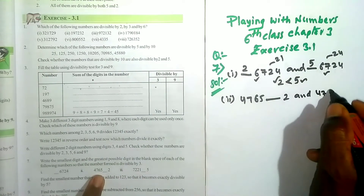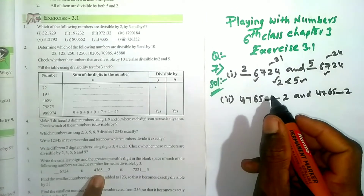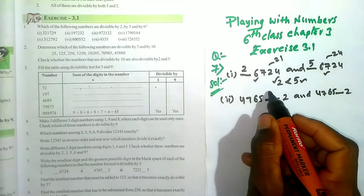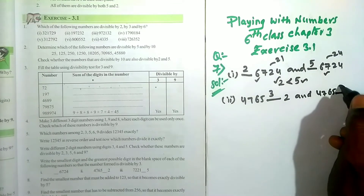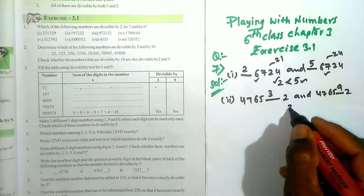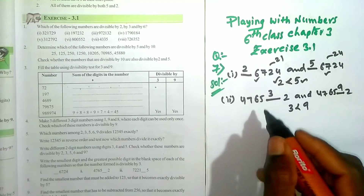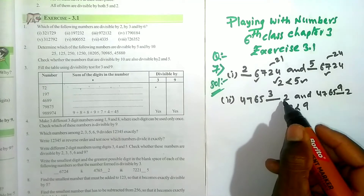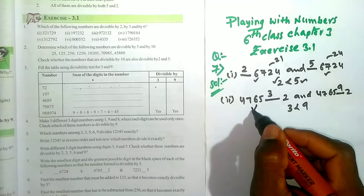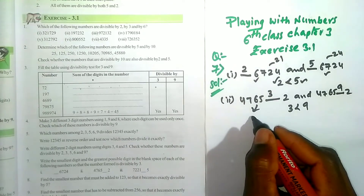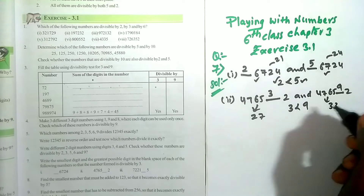The number is 4, 7, 6, 5, blank space, 2. This is the smallest digit. This is the greatest digit. This is the number of digits that is divisible by 3. Check it out.